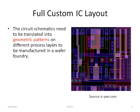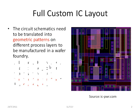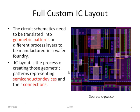In full custom layout the circuit schematics need to be translated into geometric patterns on the different process layers to be manufactured in a wafer foundry. You will basically be drawing polygons of different colors to represent the different process layers that are going to be manufactured in a wafer foundry. These geometric patterns represent semiconductor devices and their connections.